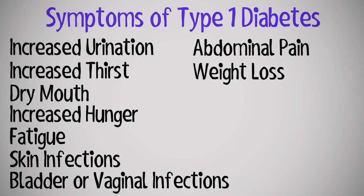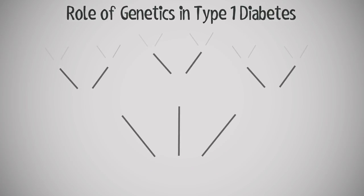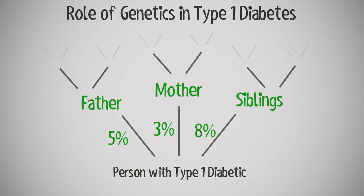Some people with type 1 diabetes experience dramatic swings in glucose levels for no apparent reason — this is called unstable diabetes, or brittle diabetes, and is found in only one to two percent of all cases. Genetics play a major role in developing type 1 diabetes; the risk of a child developing it is about 5%, 3%, and 8% if the father, mother, or siblings already have it, respectively.